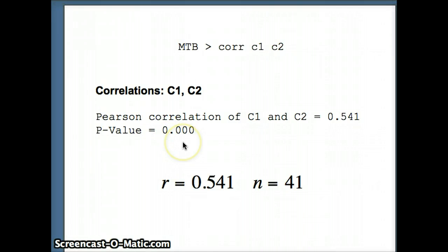And you will notice the p-value here on CORR. When Minitab gives us the p-value for CORR, it is a two-tailed test. So please keep that in mind. They will be using a slightly different strategy than I am. So we have our R of 0.541. We have our N of 41. We will use that to find our test statistic.